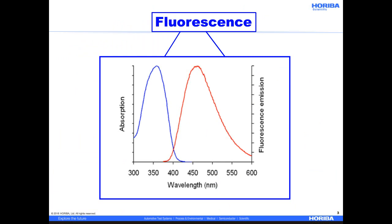Fluorescence spectroscopy is a bit different. Fluorescence spectra vary widely from very narrow to very broad spectra, sometimes spanning hundreds of nanometers with little to no identifying characteristics. This set of excitation and emission spectra, for example, could be anything. It's DAPI, a fluorochrome used for studying the nucleus of a cell, if you are wondering.